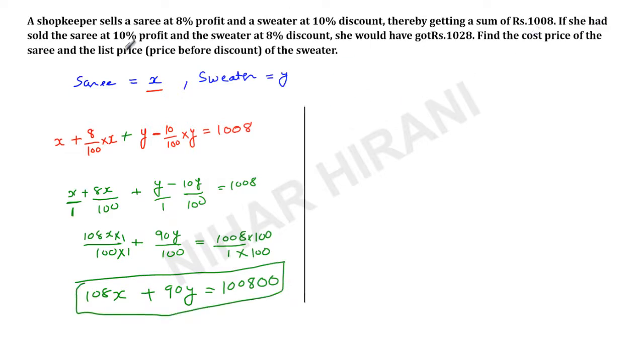Now equation number 2. If she had sold saree at 10% profit, so cost price for saree is X, and he is selling at 10% profit, it means X plus profit, that is 10%, so 10 over 100, 10% of X. Plus 8% discount on sweater. So cost price for sweater is Y, Y minus 8%, 8 over 100, 8% of Y, so 8Y, is equals to 1028.